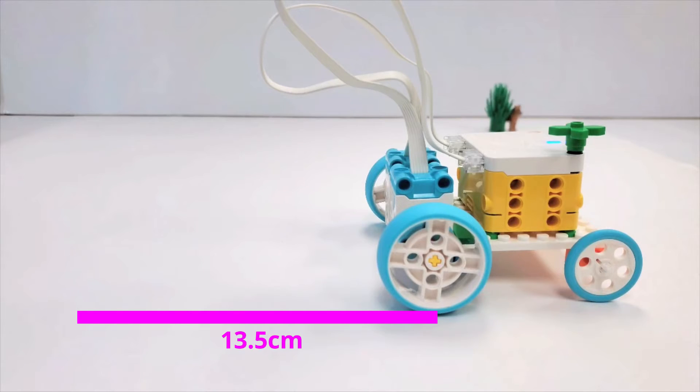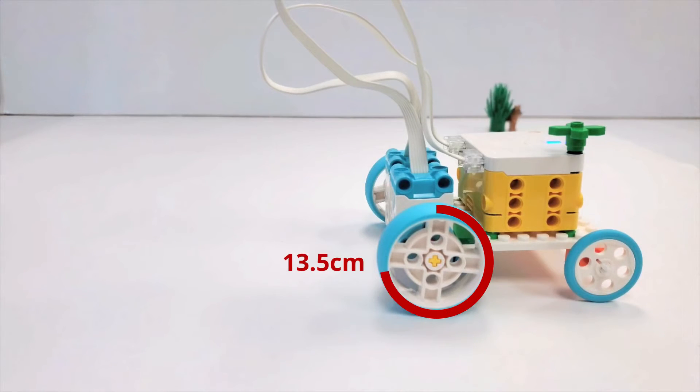The reason behind this can be explained by a simple observation. If we were to wrap a string around the wheel and measure its length, it would precisely measure 13.5 centimeters. Therefore, we can conclude that the circumference of the wheel is 13.5 centimeters.